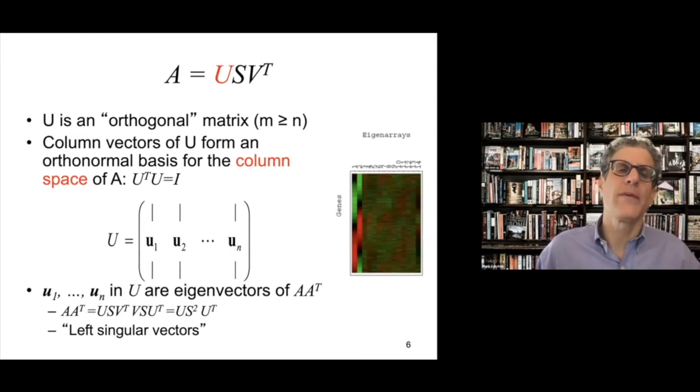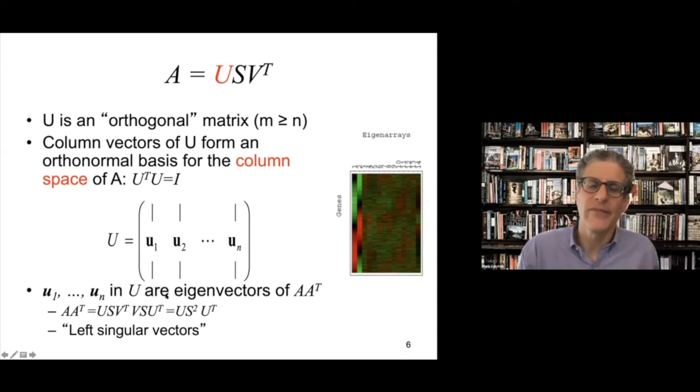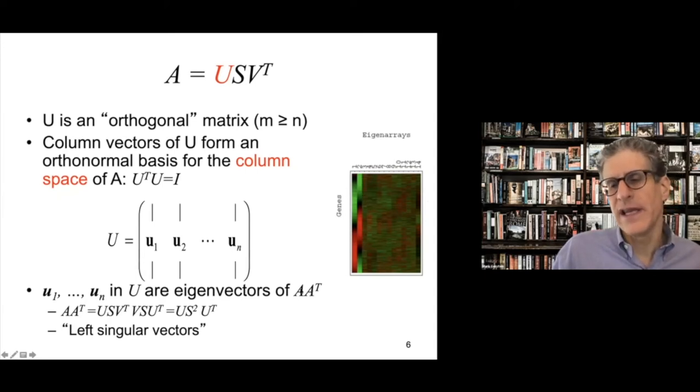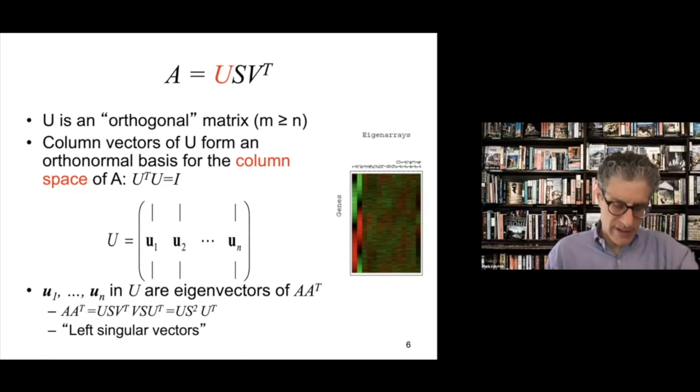And then there's a slightly more abstract way to think of this A matrix. You can actually think of it, even though it's a data matrix, we can actually think of it in this strange way as actually a linear transformation that maps a vector in the row space of the matrix into the column space. And this will become a little bit clearer in a second. So now let's talk a little bit about that U matrix that we get.